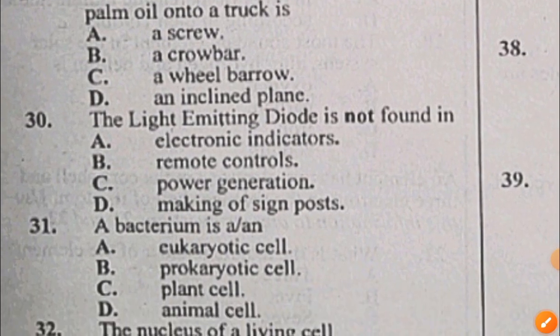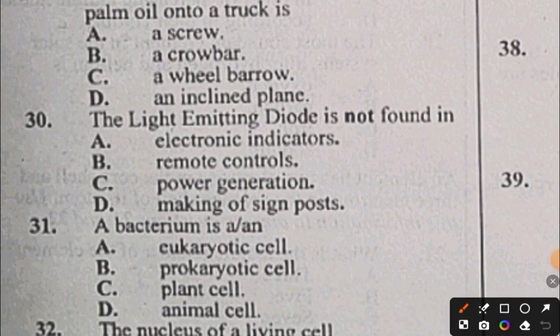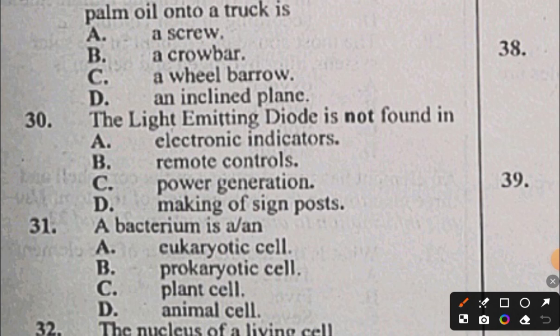Question 30: The light emitting diode is not found in: A) electronic indicators, B) remote controls, C) power generation, D) making of sign posts. The answer is C, power generation. Light emitting diode has no use in power generation. Question 31: The bacterium is a or an: A) eukaryotic cell - no, B) prokaryotic cell, C) plant cell - no, D) animal cell - no. So bacteria is a prokaryotic cell, so question 31 is B.